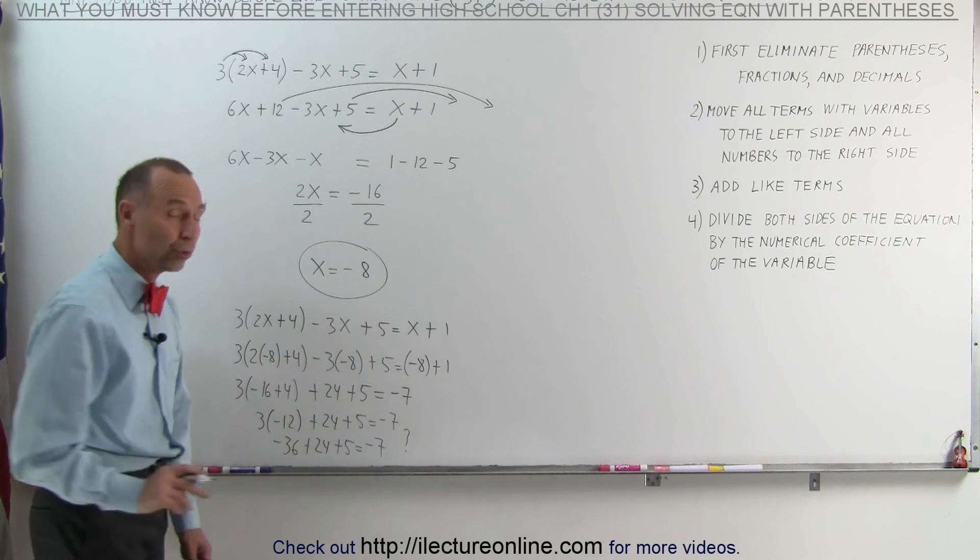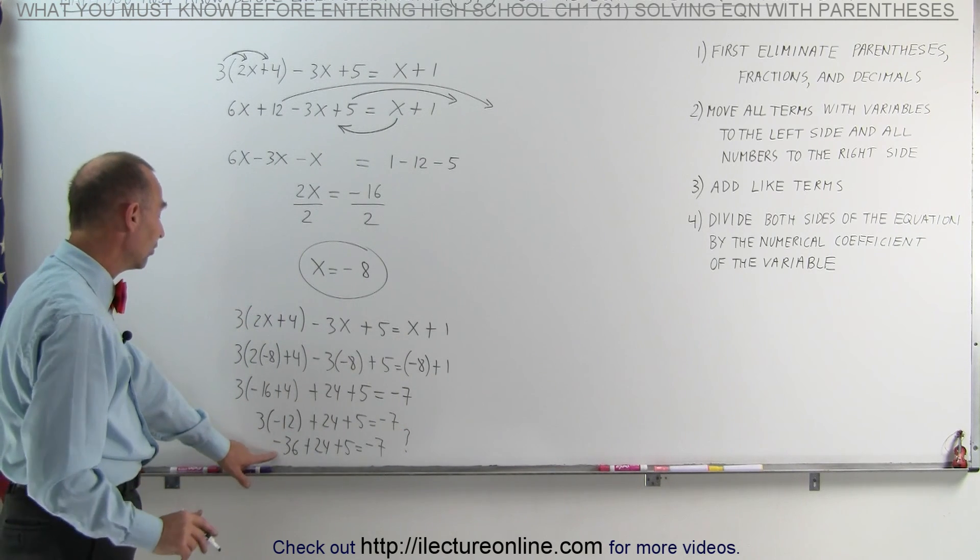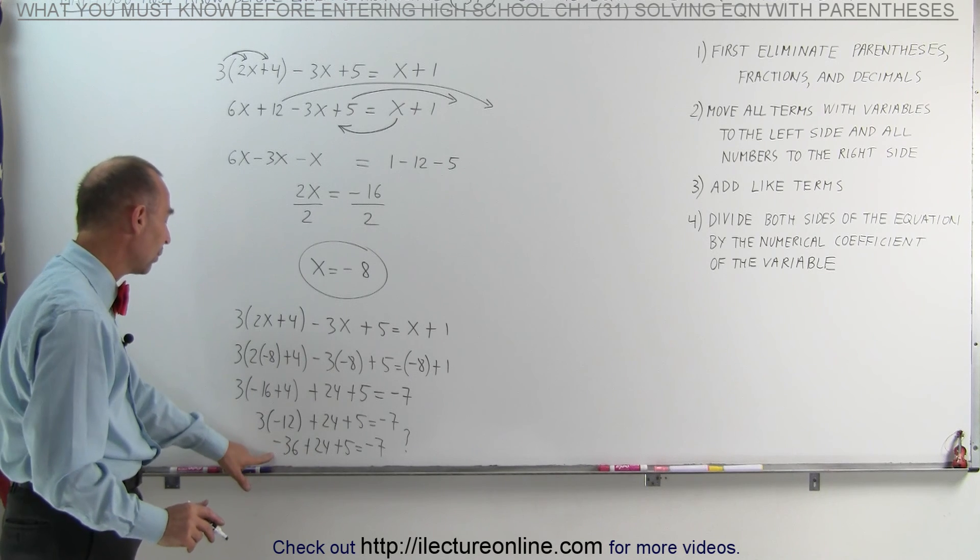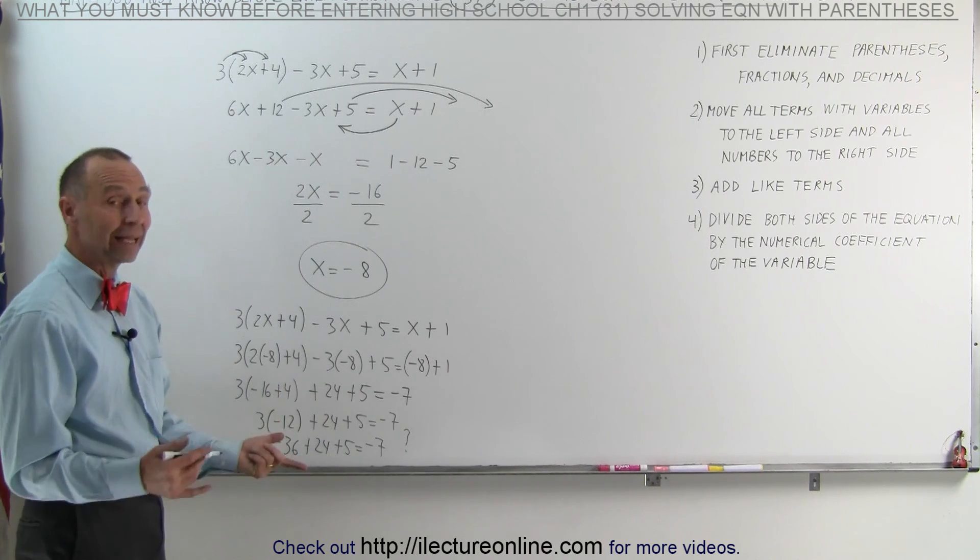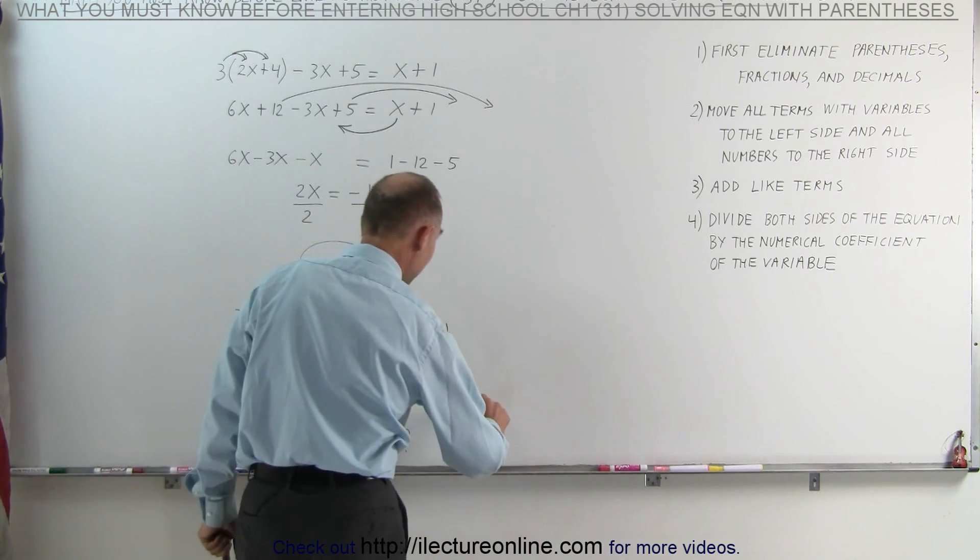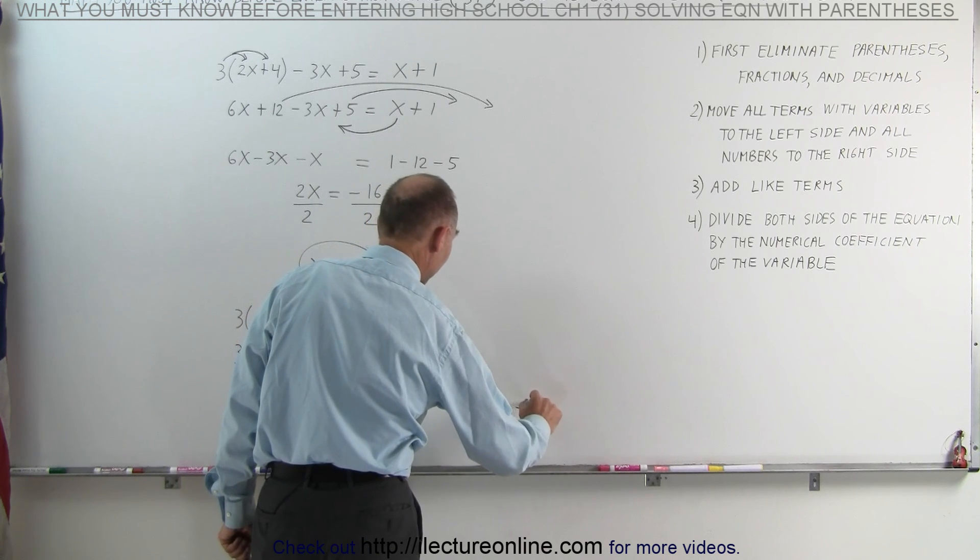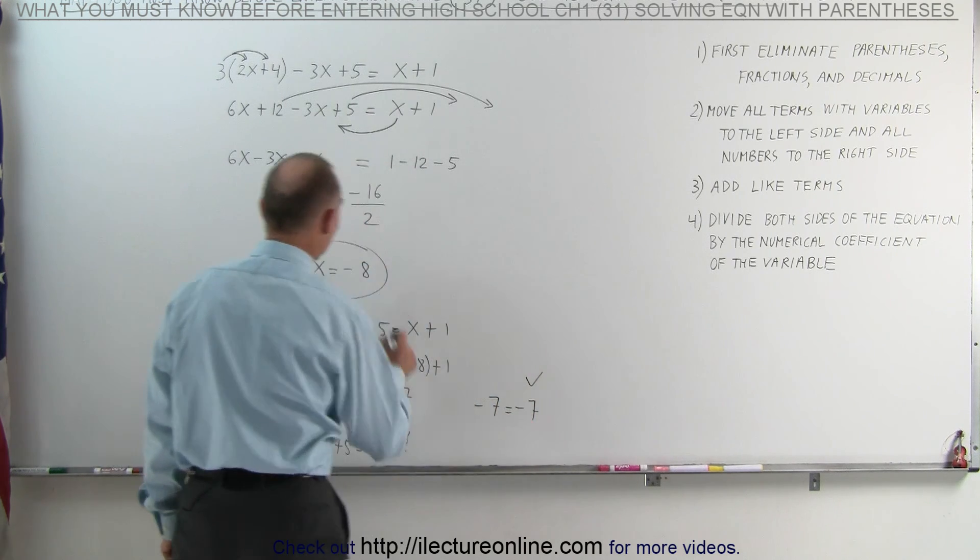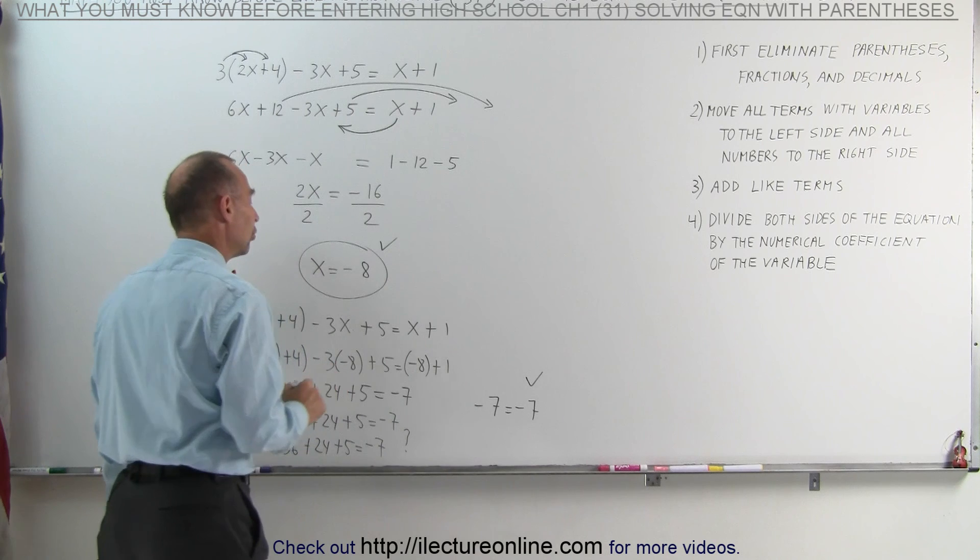Now the question mark, is that true? Well, negative 36 plus 24 is a negative 12. Add 5 to that, we get negative 7, which means that, yes indeed, negative 7 equals negative 7. That means that this was the correct solution to our problem.